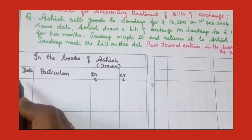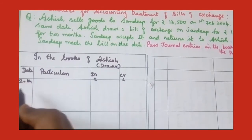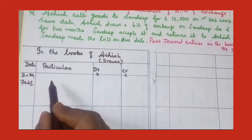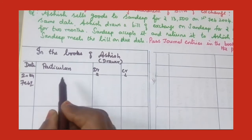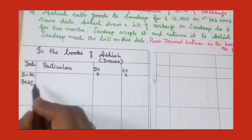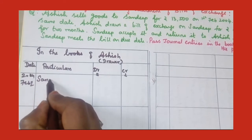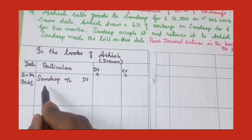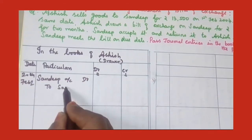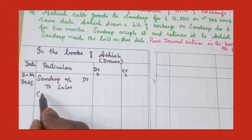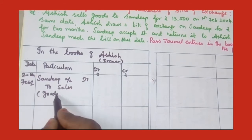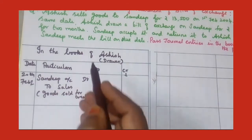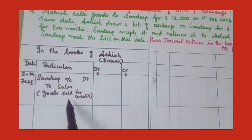He sells on February 1, 2014. The journal entry for credit sales in the books of Ashish the drawer: Sandeep account debit, and credit sales account — goods sold on credit. First, he sells the goods to Sandeep, and for that we have written the entry.